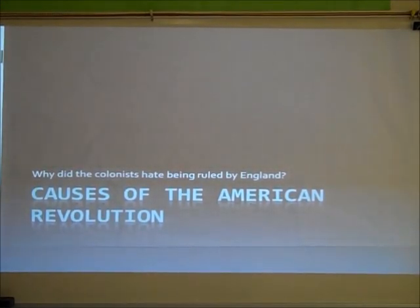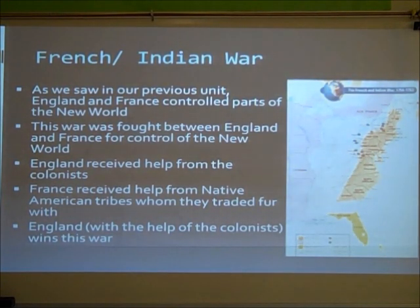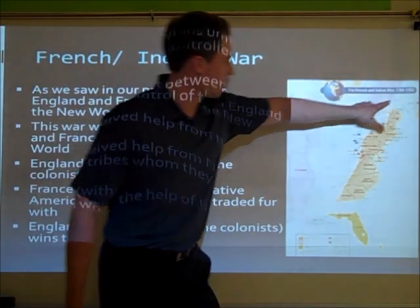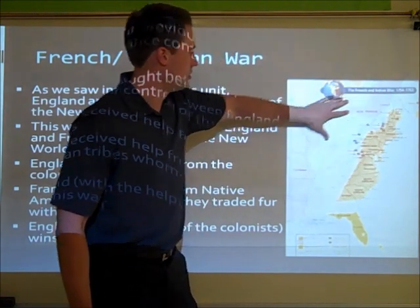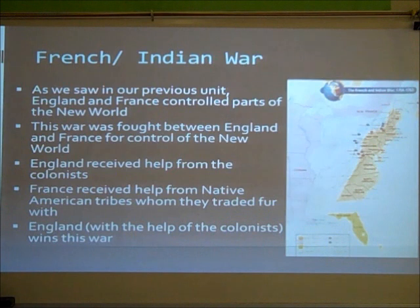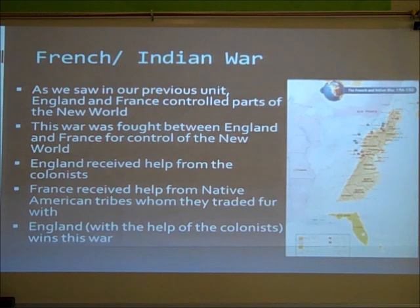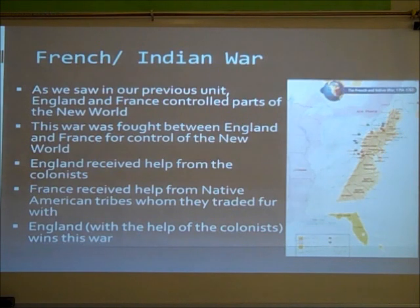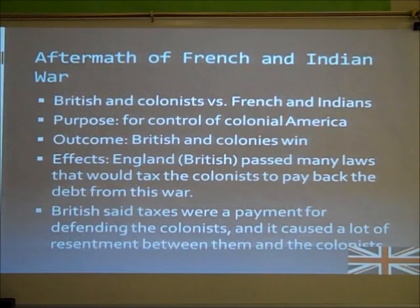Let's talk about the causes of the revolution. First of all, the French and Indian War. As we saw in our previous unit, England and France controlled parts of the New World. The English controlled the thirteen colonies and France controlled the area right next to the thirteen colonies. This war was fought between England and France for control of the New World. England received help from the colonists, and France received help from the Native American tribes who they traded fur with. England, with the help of the colonists, wins this war.